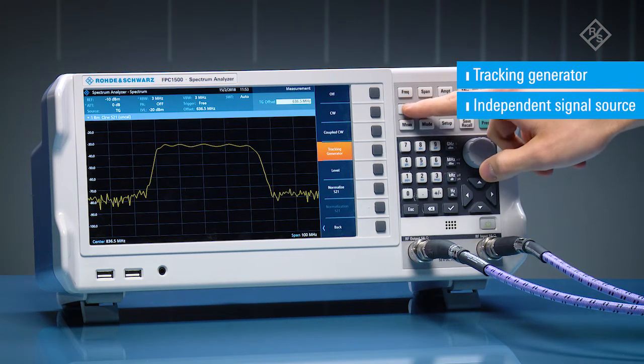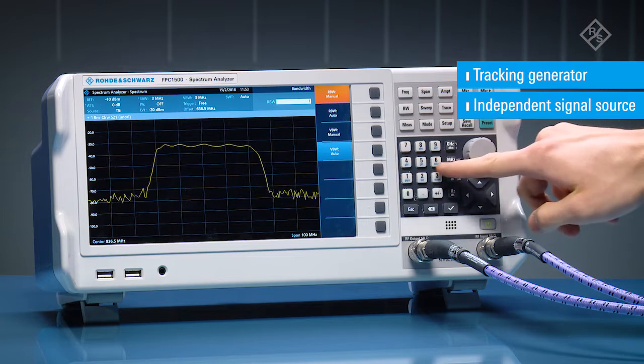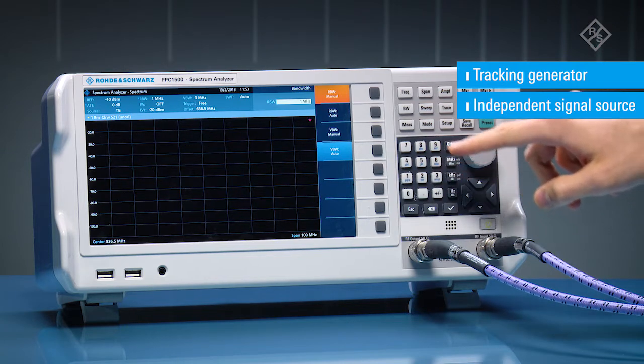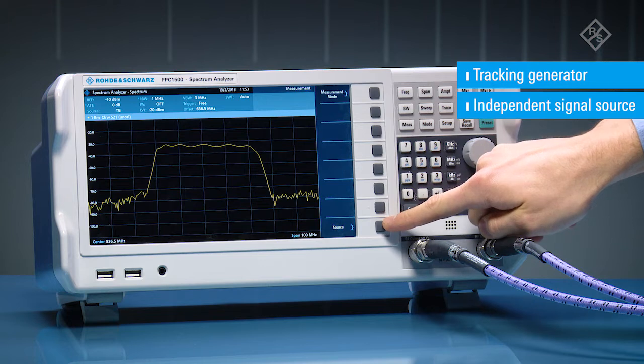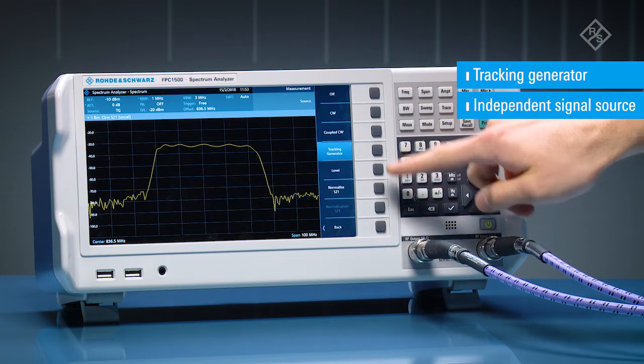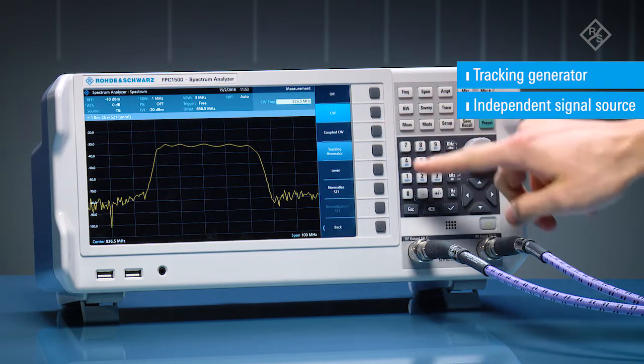The unique independent signal source of the FPC-1500 also supports signal generator functionality. Two different modes are available. One mode is used to configure a CW signal as required for the measurement setup.